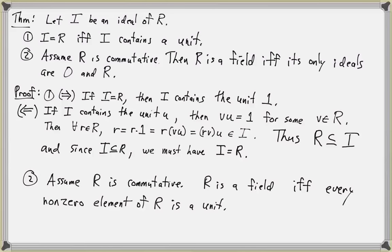So we see that an ideal I of R equals R if and only if I contains a unit, and when R is commutative, R is a field if and only if its only ideals are the trivial ideal {0} and the ring R itself.